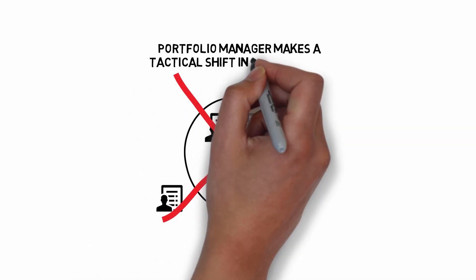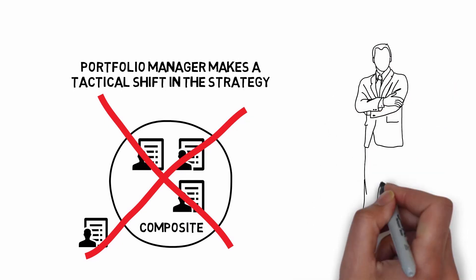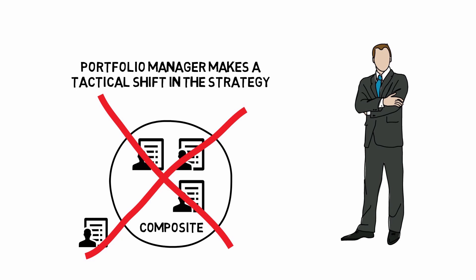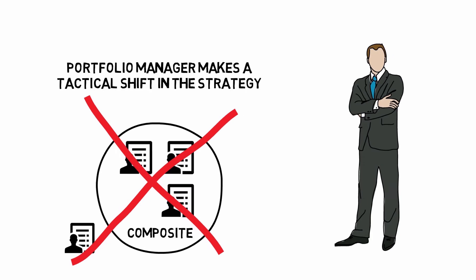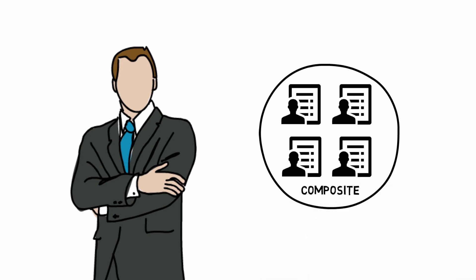If a portfolio manager makes a tactical shift in the strategy, such as holding higher cash because of the current market conditions, this would be considered an evolution of the strategy definition rather than a reason to remove an account from the composite.